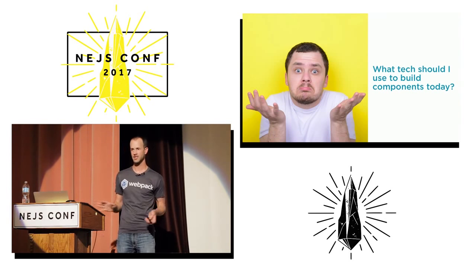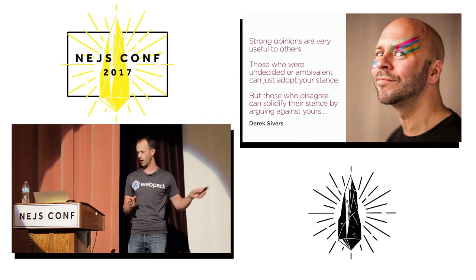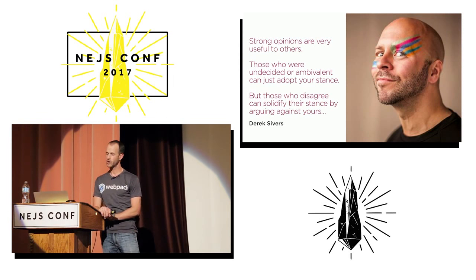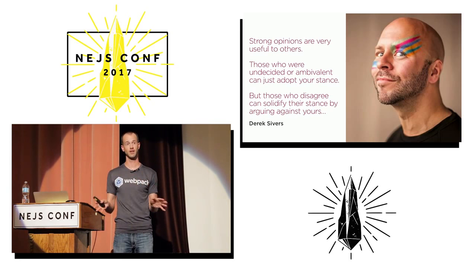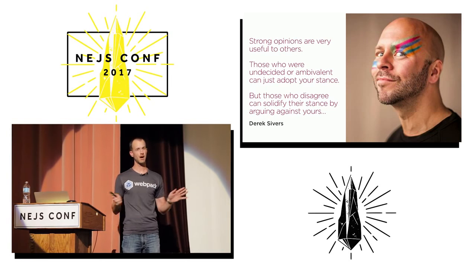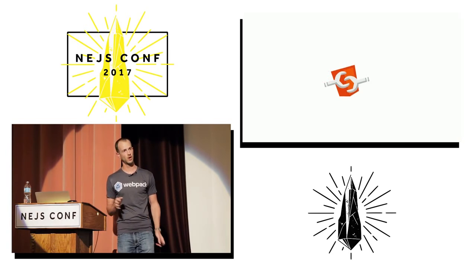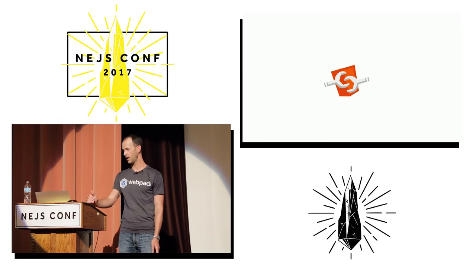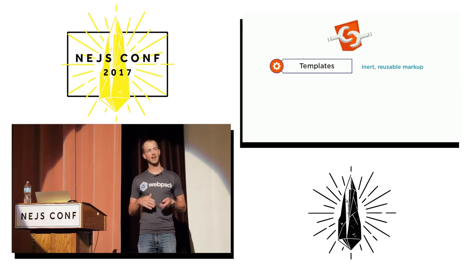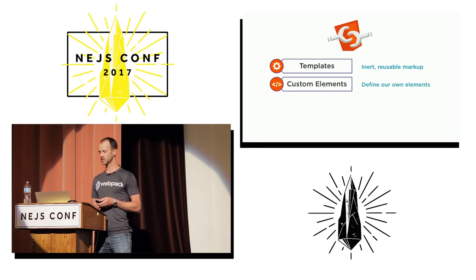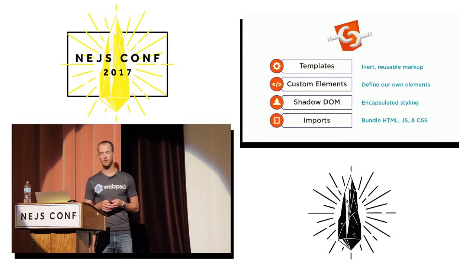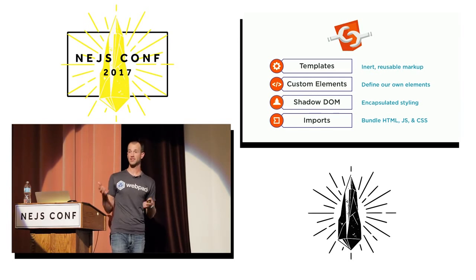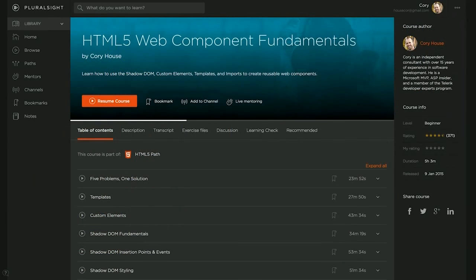Today we're all asking ourselves: how should I build components? I have an opinion on this. I want to caveat that strong opinions are useful — those who are undecided can adopt your stance, and those who disagree can solidify their stance by arguing against yours. The web component standard is a compelling option. Web components consist of four core technologies: inert templates, custom elements where you define your own HTML elements, shadow DOM which encapsulates your styles so they don't leak, and HTML imports to bundle HTML, JavaScript, and CSS. I'm a big fan of standardization and even created a Pluralsight course on HTML5 web components.